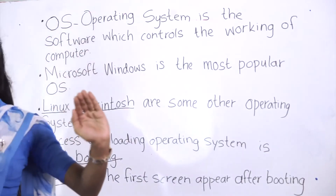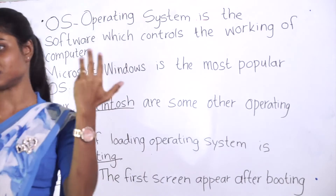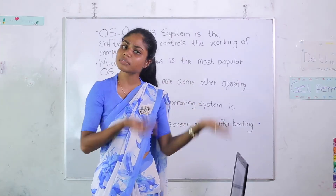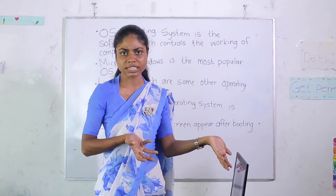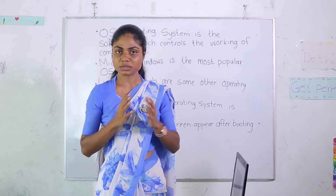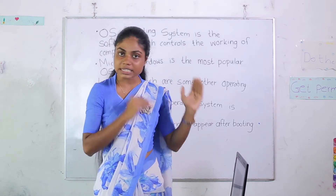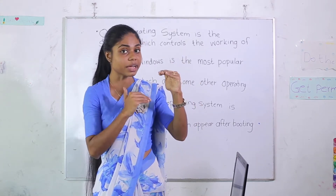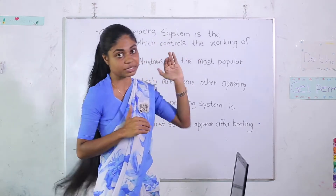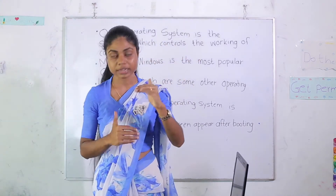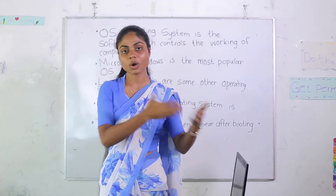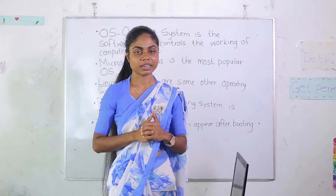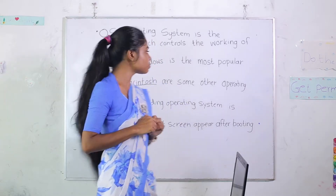Likewise, the middle person between us — the people who work with the computer — and the people who make the computer is the OS. Without this OS we don't know how the computer is working. So the operating system is the middleman who helps us to work with this computer.